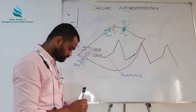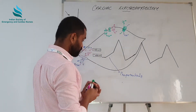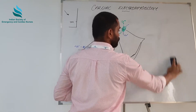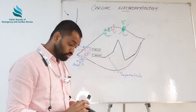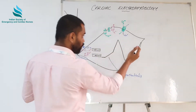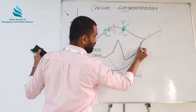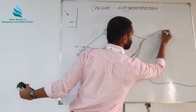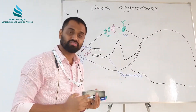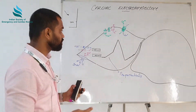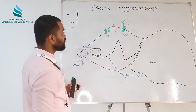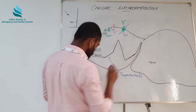From the SA node, impulses spread towards the atria. Imagine a SA nodal cell with an atrial cell adjacent to it. The action potential generation of the atrial cell is quite similar to that of a ventricular cell, which is contractile myocardium. In the atrial cell, the resting membrane potential is minus 90 millivolts, in contrast to minus 60 millivolts in the SA nodal cell. Gap junctions are present between the cells of the myocardium.